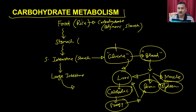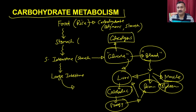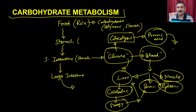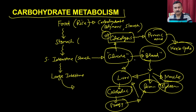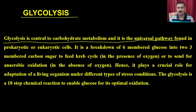Once glucose is produced, it enters different types of organs. Within those organs, it first enters a series of reactions called glycolysis. At the end of glycolysis, it produces pyruvic acid. That pyruvic acid then enters another cyclic reaction called the Krebs cycle. In today's lecture, we will discuss catabolic reactions such as glycolysis and the Krebs cycle.